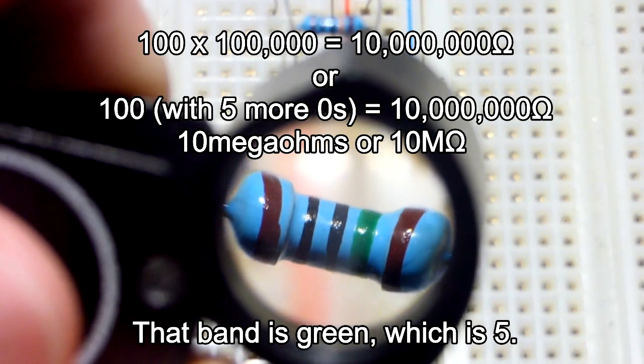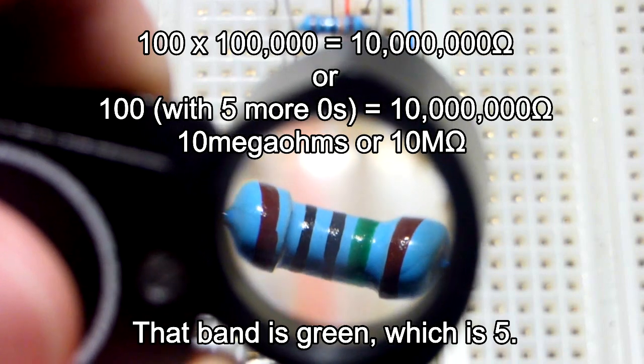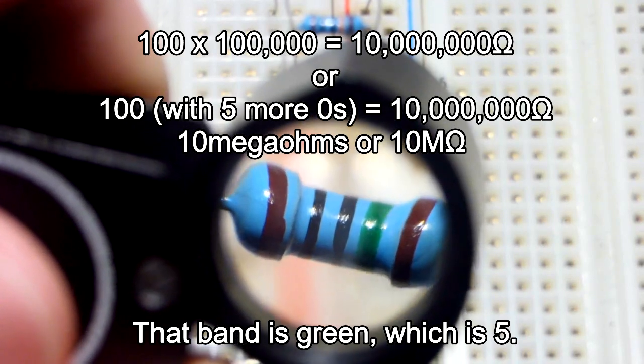So 1, 0, 0, and then 5 more 0s after it for 10,000,000.